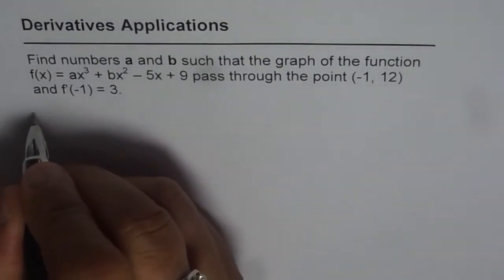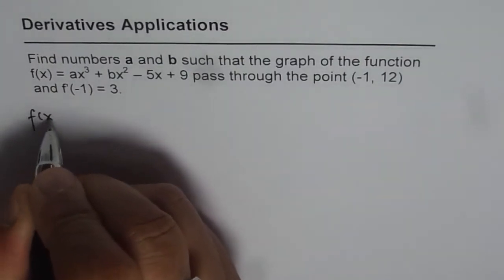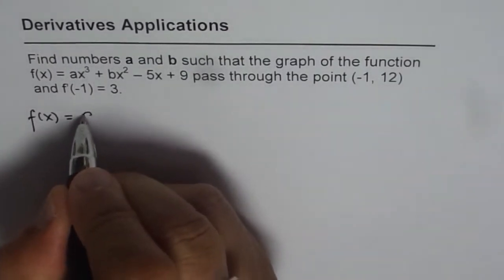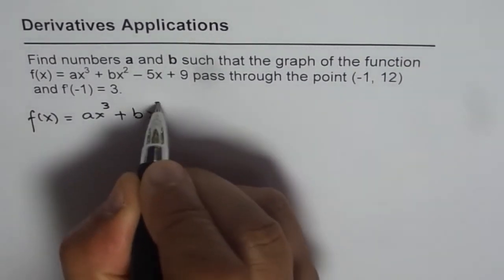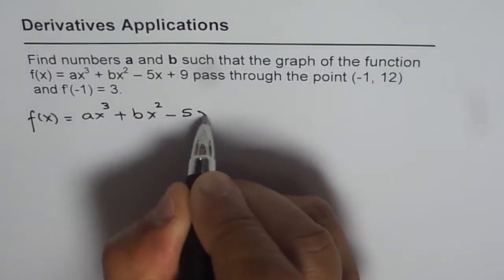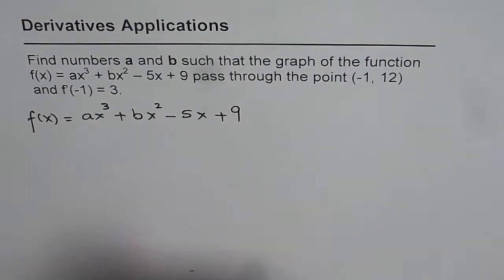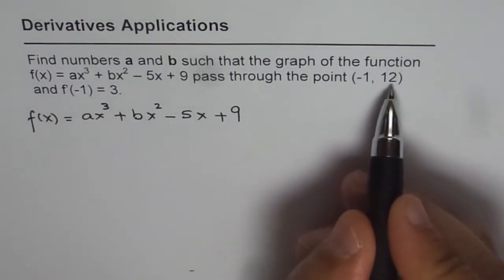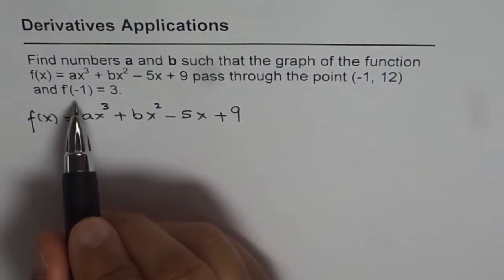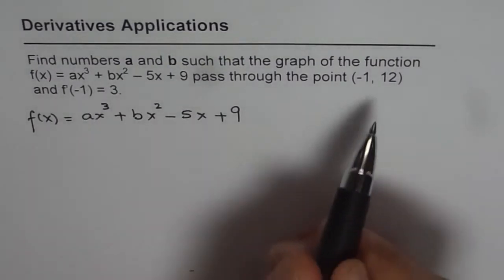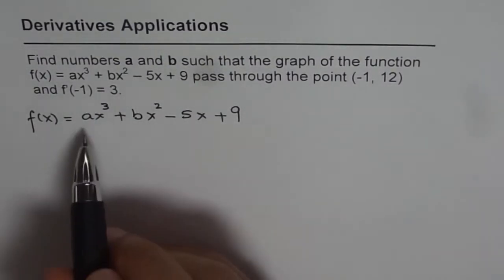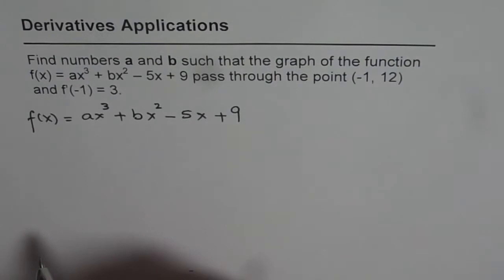So what we are given here is a function f(x) equals a cubic function ax³ + bx² - 5x + 9. At minus 1 the value is 12 and the derivative is 3 at x equals minus 1. So these two conditions will give us two equations. We have two unknowns so that should help us to find the values of both the unknowns.